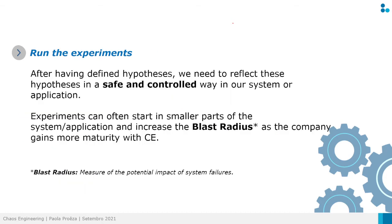After defining all these hypotheses, we need to reflect them in a safe and controlled way in our system or application. It's very important to run the experiments in a controlled environment so the team is able to monitor the experiment and have a quick response in case something goes wrong. We are running Chaos Engineering experiments — we are injecting chaos into the system — so we need a safe environment.